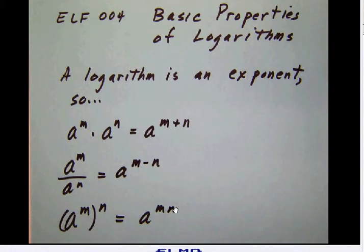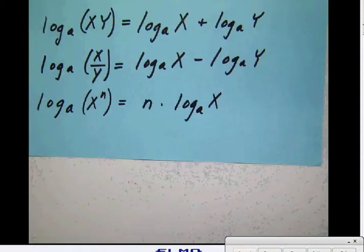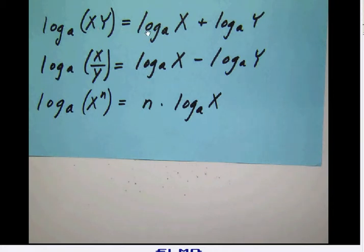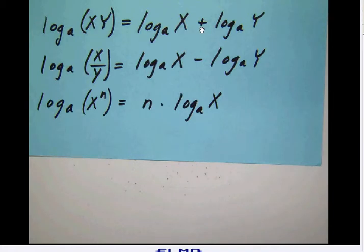It should not be a surprise that since logarithms are exponents, they are going to have rules very similar to these. The logarithm of x times y — when you multiply numbers you add their powers. The logarithm to the base a of x is an exponent, and the logarithm to the base a of y is another exponent, so when you multiply numbers you add their logarithms. The first basic rule simply says: when you multiply, add the powers.